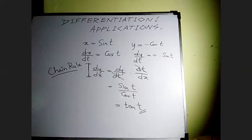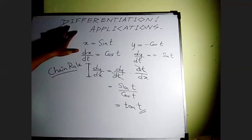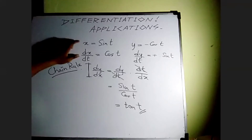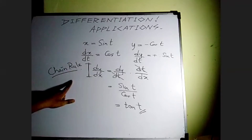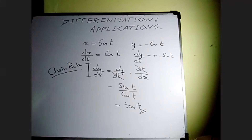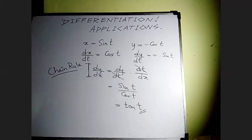So in the first part we covered parametric equations and chain rule. We will next discuss the third, fourth, and fifth topics: tangent, normal, and how to find coordinates.